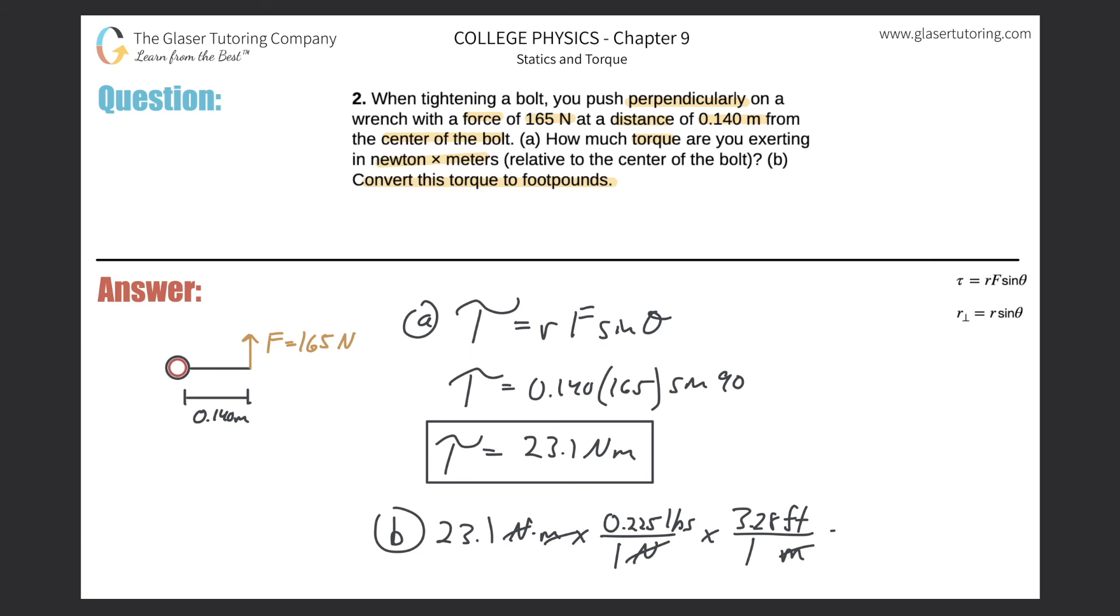Okay, so the meters would cancel, and that would give us now our answer. So all we have to do is now plug it in: 23.1 times 0.225 times 3.28, and it comes out to be about 17.0. That is now foot-pounds. And that takes care of this problem.